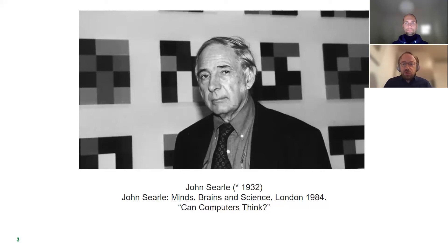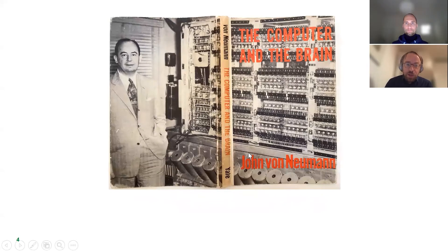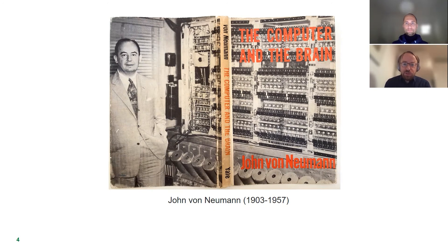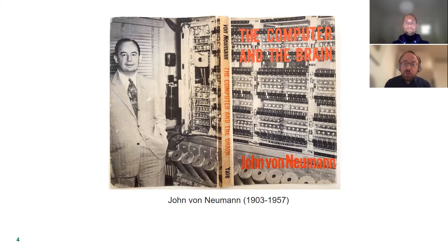That's why I wanted to introduce another figure very important for the development of computers, computer science, and AI research — John von Neumann. Von Neumann also died rather young, in 1957, but one year after his death, an essay appeared published by his wife, Clara von Neumann. This essay is not really finished — it was published from a non-finished manuscript. In this book, published 1958, the focus is exactly in what way we can compare the digital computer, analog computers, and the human brain — a direct comparison between computer and brain.